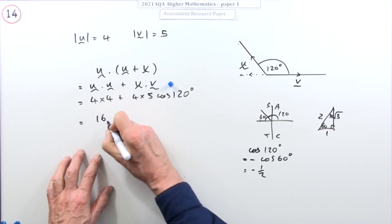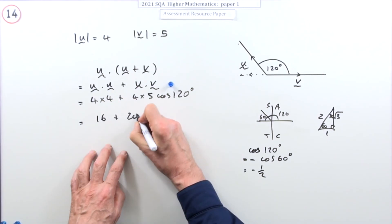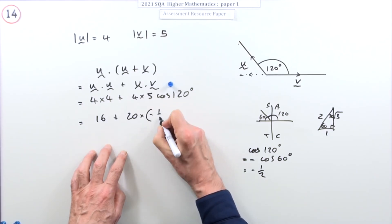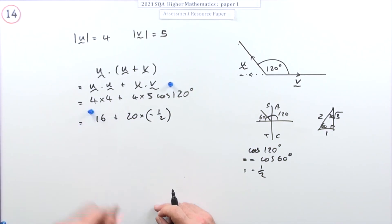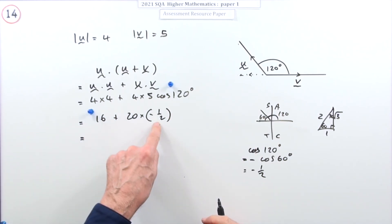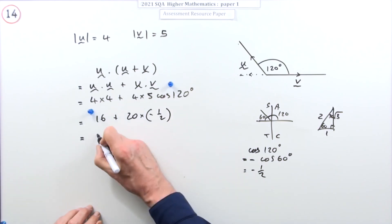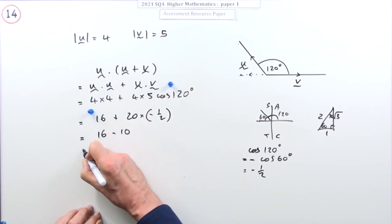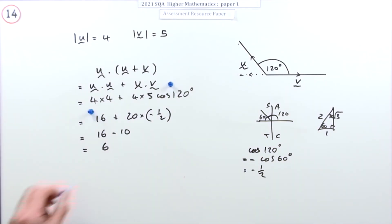So that means I've got 16 plus 20 times negative a half. Now there's two marks here. One mark was for getting one bit and the other mark's for getting the other. So that's negative 10. So negative 10, I'll just put it down, 16 take away 10. So that's going to end up as 6 for the final mark.